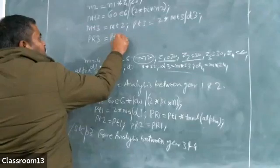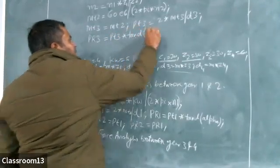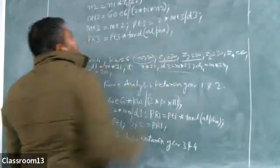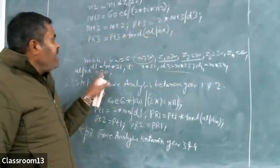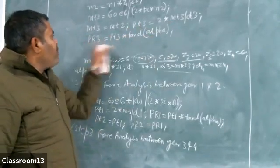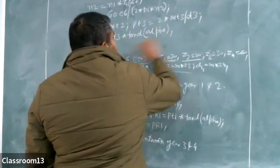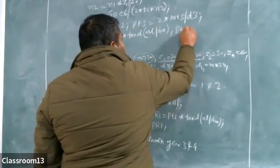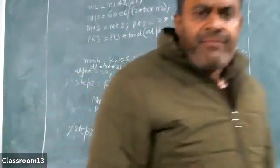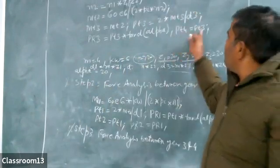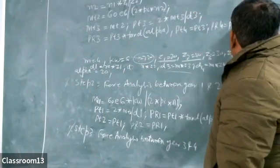PR3 is given by Pt3 multiplied by tangent of alpha, so tand(alpha). Pt3 will be picked from the previous line; alpha is already defined as 20 degrees. So there is no problem in calculation of PR3. Once Pt3 is available, Pt4 = Pt3 and PR4 = PR3, as they are equal in magnitude but opposite in direction.